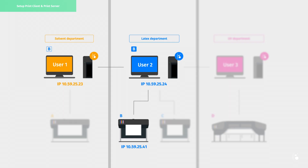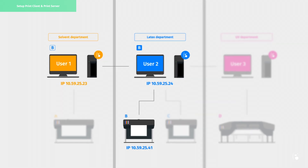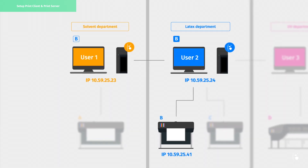The print client and the print server configuration for printer B's driver is done. Now, if we print a file from user 1, the job will be submitted to user 2, which will handle the RIP processing.